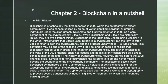The launch of Bitcoin in the wake of the 2008 financial crisis caused it to be mistakenly considered a direct consequence of the latter. The history of cryptocurrencies, however, started before the 2008 financial crisis — several older cryptocurrencies failed to take off and never made it beyond the cryptocurrency community. The ancestors of Bitcoin were developed by members of the cypherpunks, a network of activists advocating for widespread robust cryptography and privacy-enhancing technologies as a route to social and political change. The cypherpunks used peer-to-peer systems and cryptography to process secure transactions, with a big 'bar element' meaning the banking system.